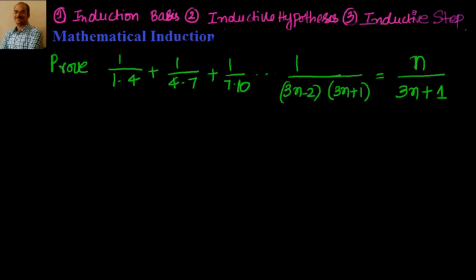Welcome back. We have to prove 1/1·4 + 1/4·7 + 1/7·10, where the nth term is given by 1/(3n-2)(3n+1) and the sum of all terms equals n/(3n+1). The nth term means: substituting n=1 gives 1·4 (first term), n=2 gives 4·7 (second term), and n=3 gives 7·10 (third term).